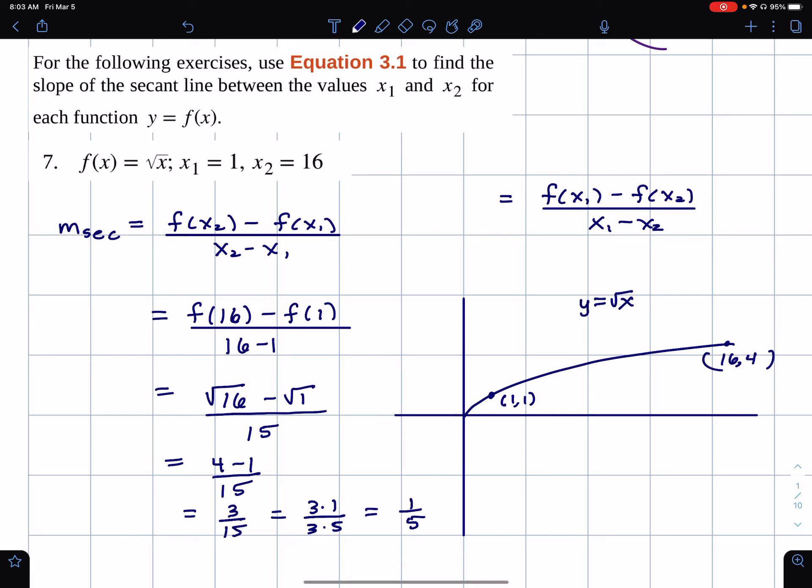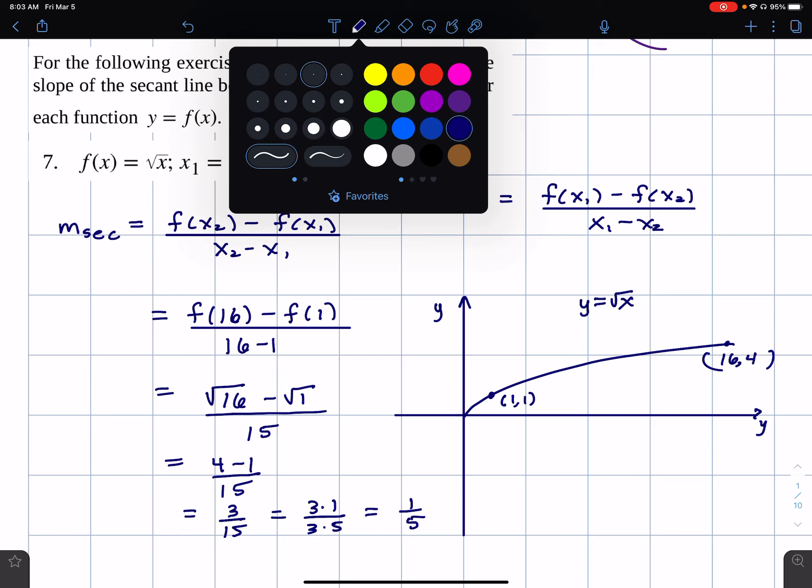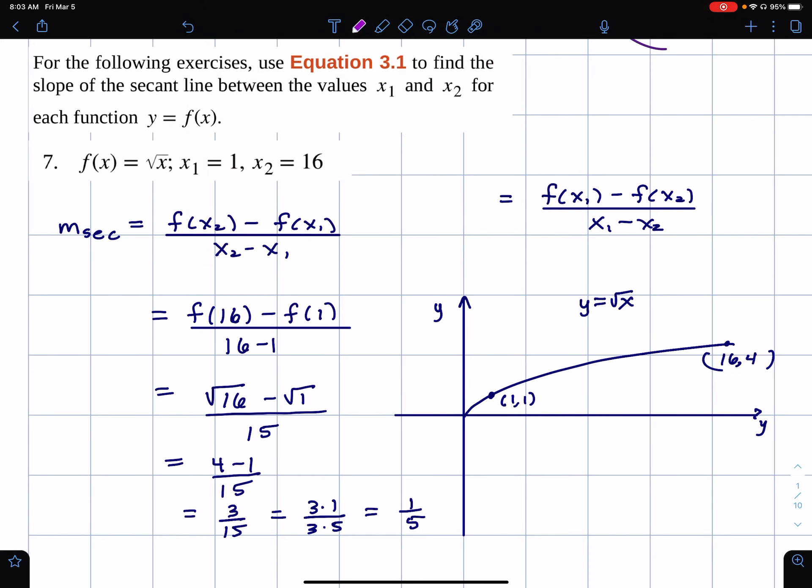Okay, I'm not saying that this graph is perfectly written, especially 16, 4, where it looks, but it's a rough estimate. I don't think it's that bad, actually. So, the secant line is this line between these two points on the curve, and the idea is that the slope is apparently 1 fifth.